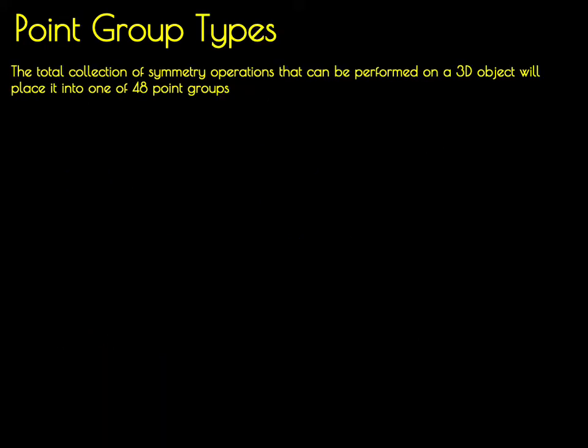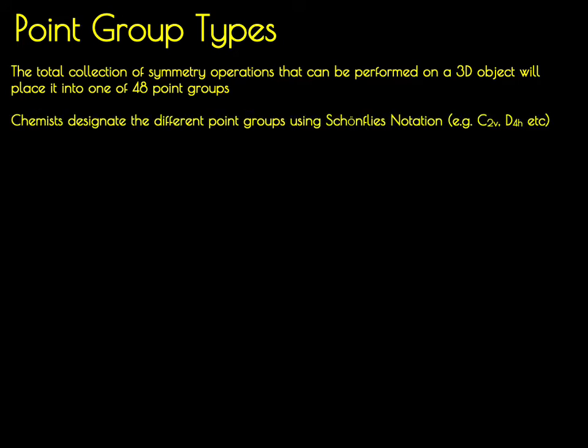Any 3D object can be assigned to one of 48 different point groups. Depending on your scientific discipline, the point groups can be specified using different conventions. Chemists and physicists use so-called Schoenflies notation. In this notation, point groups are primarily divided according to the number and type of rotational axes they possess and are further divided according to the types of mirror planes they possess.